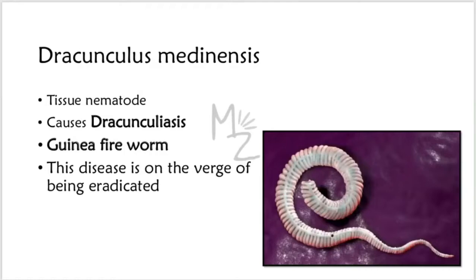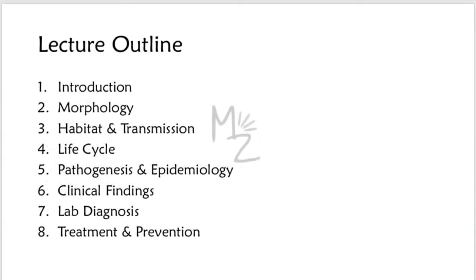Dracunculus medinensis is a tissue nematode responsible for causing dracunculosis. It is also called the Guinea fire worm. This disease is on the verge of being eradicated. The lecture will cover morphology, habitat and transmission, life cycle, pathogenesis, epidemiology, clinical findings, lab diagnosis, treatment, and prevention.